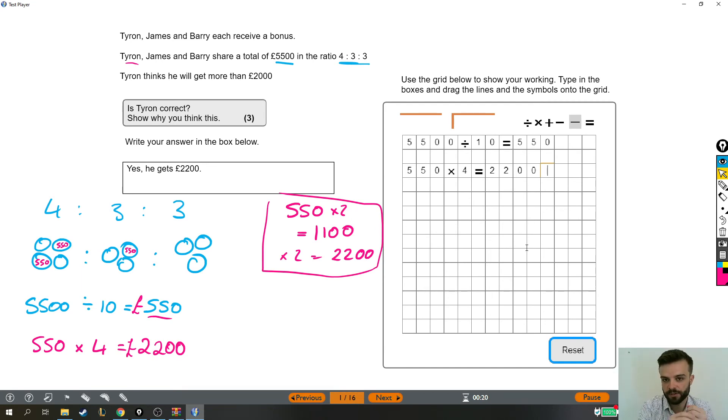We divided by 10 because we need to split it into 10 parts in order to give one person 4 and then 3 and then 3. That's 10 altogether. So we split it into 10. Worked out that each one in the ratio is worth 550. So one in the ratio is 550. So four of them is four lots of 550, which is 2,200.